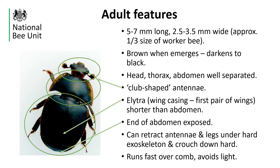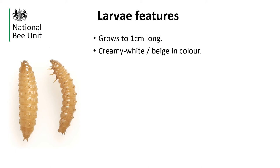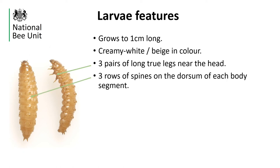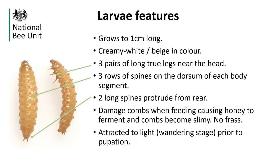Small Hive Beetle will avoid light and run quickly over combs in a hive to avoid it. The larvae can grow up to one centimetre long and are creamy white or beige in colour and can be confused with greater wax moth larvae, which are also found in bee colonies and are of a similar size and colour. Small Hive Beetle larvae have three pairs of legs at the head end, whereas wax moth larvae have three pairs of short legs at the head plus four pairs of pro legs on their abdomen. Small Hive Beetle larvae have three rows of spines on their dorsum and two long spines which protrude from their rear, neither of which wax moth larvae have. Small Hive Beetle larvae damage combs while they feed and cause honey to ferment; affected combs become slimy and have a characteristic odour reminiscent of rotten oranges. Small Hive Beetle larvae don't produce frass — a mixture of silk and faecal matter similar in appearance to cobwebs — but wax moth larvae do. Small Hive Beetle larvae are also attracted to light during the wandering stage, whereas wax moth larvae will avoid the light.